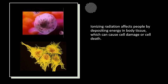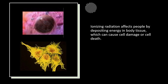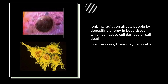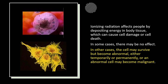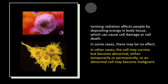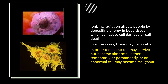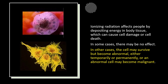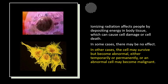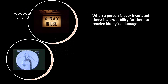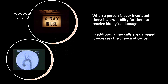Ionizing radiation affects people by depositing energy in body tissue, which can cause cell damage or cell death. In some cases there may be no effect whatsoever. In other cases the cell may survive but become abnormal, either temporarily or permanently. An abnormal cell may become malignant; if it does not become malignant, it is benign. A malignant abnormal cell is cancer. When a person is over-irradiated, there is a probability of receiving biological damage, and when cells are damaged, it increases the chance of cancer.